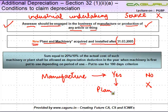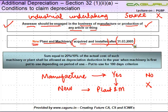You should acquire plant and machinery — and it has to be new plant and machinery which is both acquired and installed after 31st March 2005. What this means is that if the asset is acquired before 31st March 2005, even though the installation might happen after 31st March 2005, still no additional depreciation will be available.